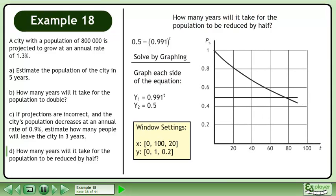We can solve this by graphing. Graph each side of the equation with the window settings shown. The point of intersection is 76.7, 0.5.